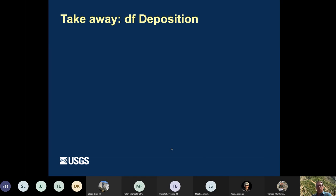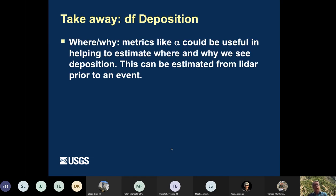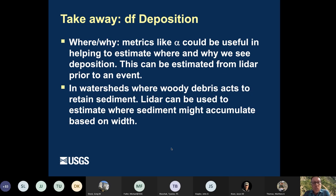So here are a few takeaways from our debris flow deposition. We can use metrics to get to the where and why, like this alpha metric that might be useful to estimate where and why we see deposition. And this can be estimated from LIDAR prior to an event. In watersheds where woody debris retains sediment, LIDAR can be used to estimate where sediment might accumulate by using this approach that I outlined to estimate width and then using an estimated wood length. So those are a couple things you could do before an event to try and estimate where deposition might happen.